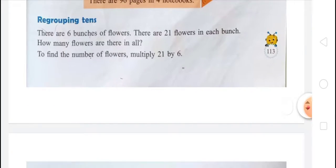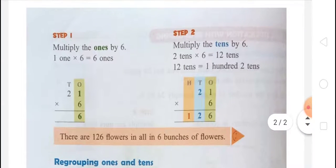In step one, multiply the ones by 6. One one multiplied by 6 equals 6 ones. In step two, multiply the tens by 6. Two tens multiplied by 6 equals 12 tens, and 12 tens equals 1 hundred and 2 tens. So we write 12. In simplest form, 6 ones are 6 and 6 twos are 12. So there are 126 flowers in all in 6 bunches.